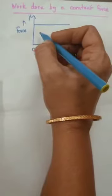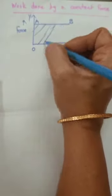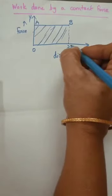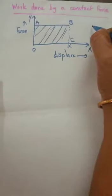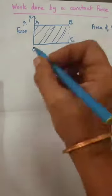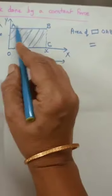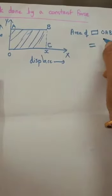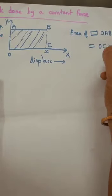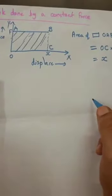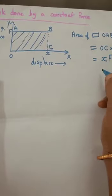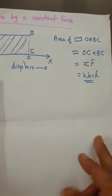If you take the area under this graph, a straight line AB is obtained. Suppose the displacement is x and the point is C. Then the area of rectangle OABC equals length into breadth. The length OC is x, and the breadth BC is F, the magnitude of force. So the area is x into F — force into displacement — which is equal to work done. The area under the force-displacement graph gives the work done.